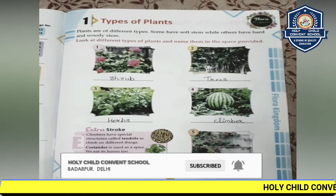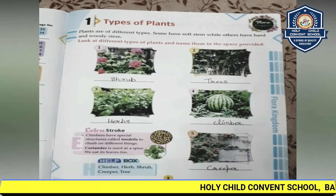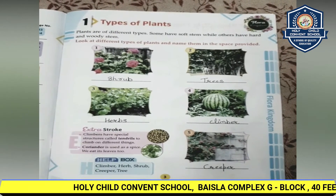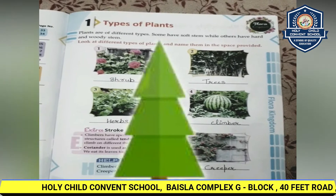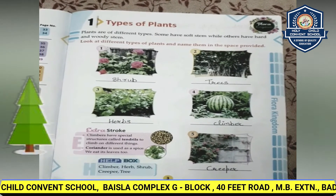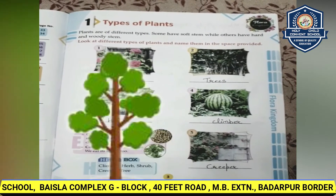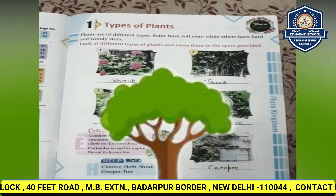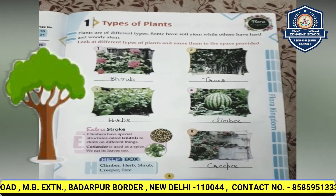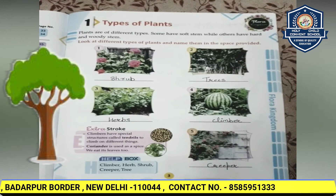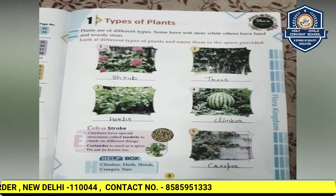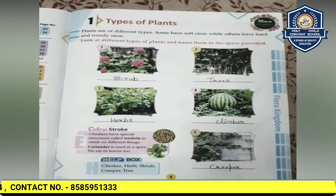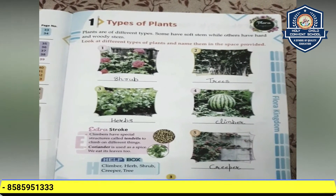Now let us study about the second type of plant — trees. Trees are tall plants with a trunk and branches made of wood. Trees can live for many years — bahut purane saal bhi purane hote hain. The four main parts of trees are the roots, trunk, branches, and leaves.